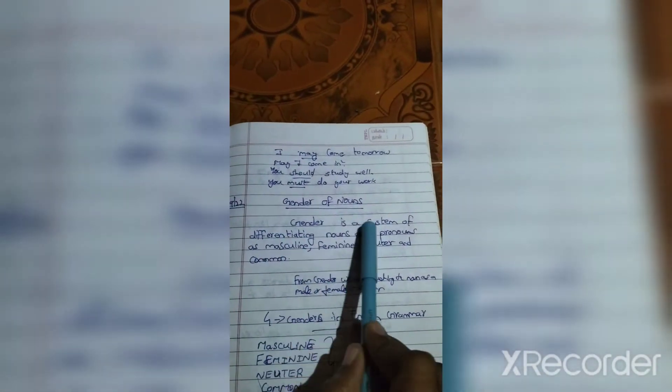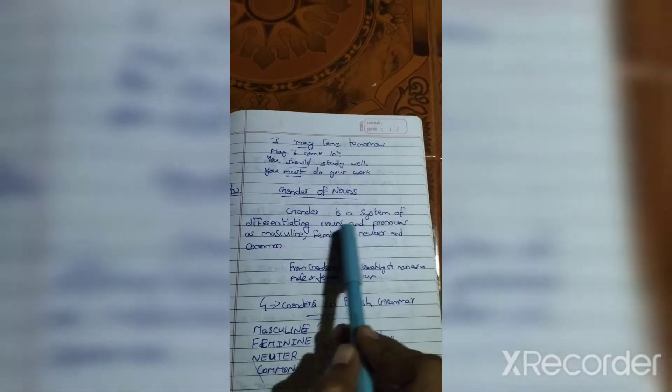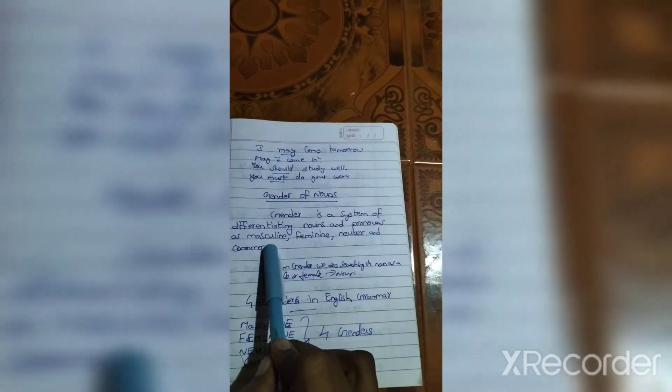Gender is a system of differentiating nouns and pronouns as masculine, feminine, neuter, and common.